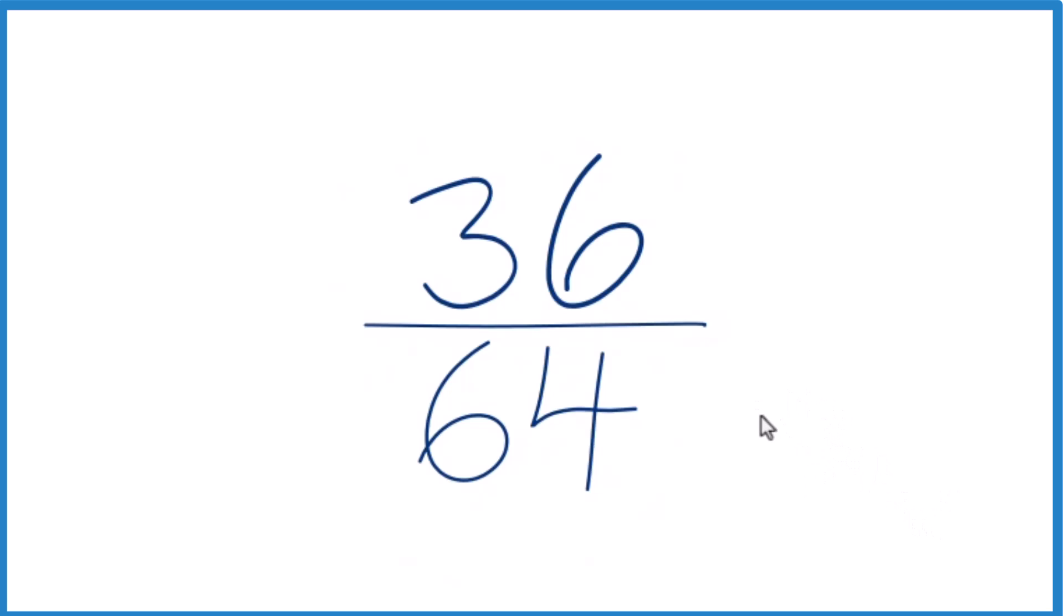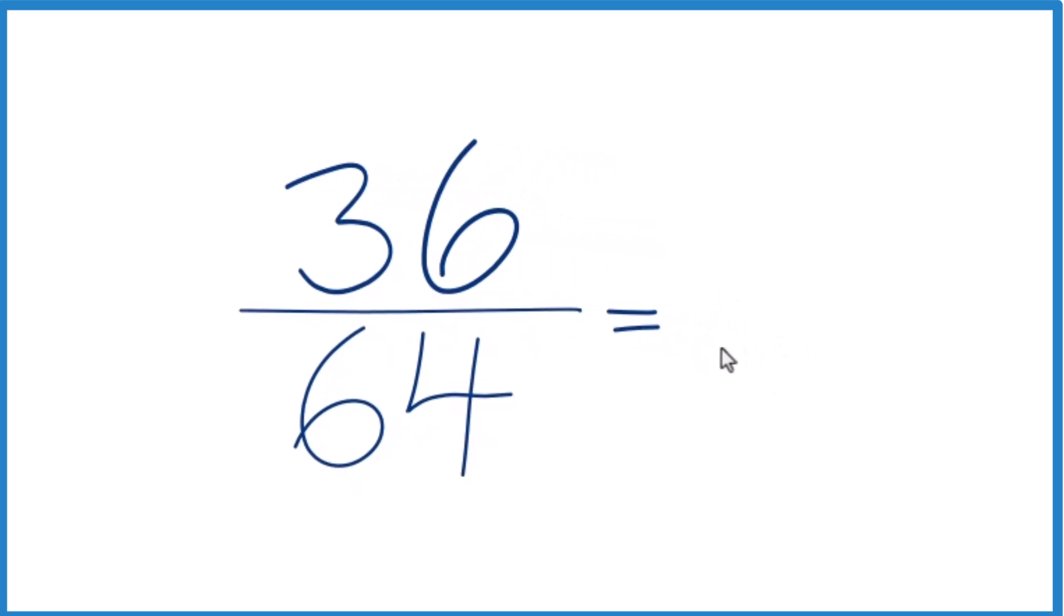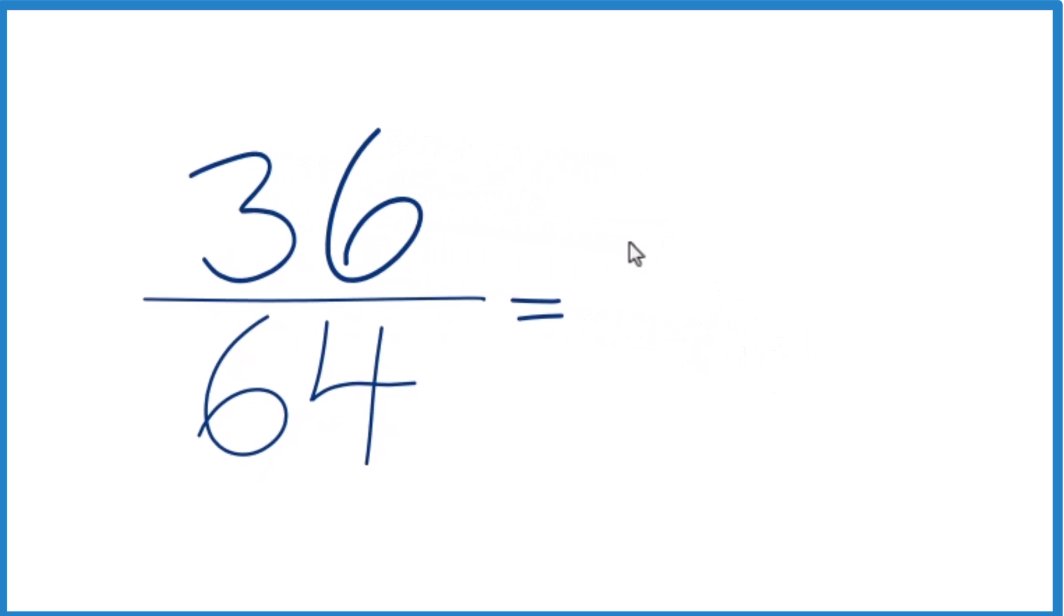To do that, we want to find a common factor, something that goes into 36 and 64 evenly. Since they're both even, let's divide them both by 2. 36 divided by 2 is 18, and 64 divided by 2 is 32.